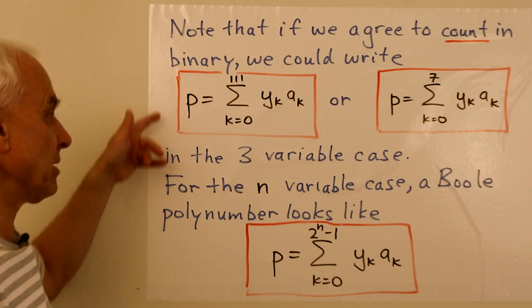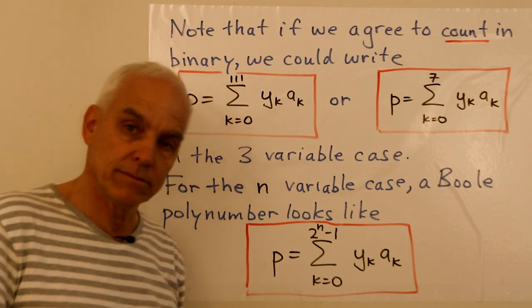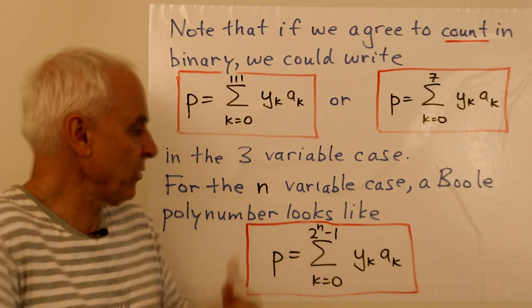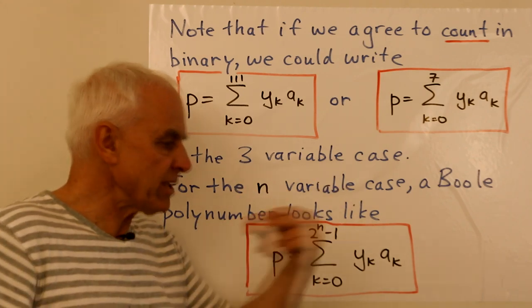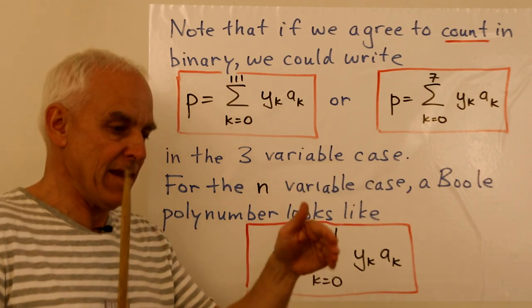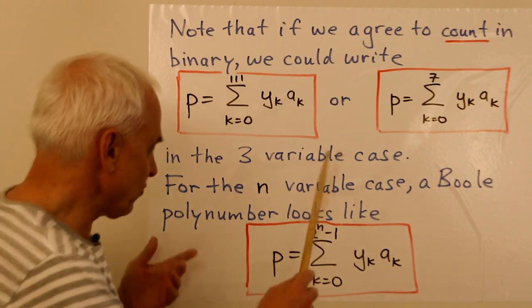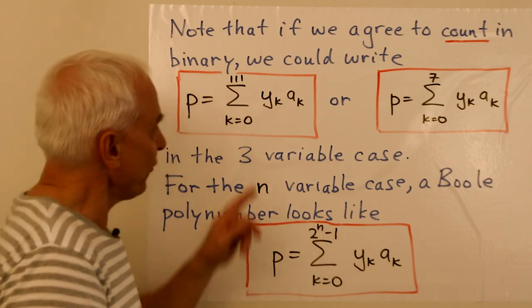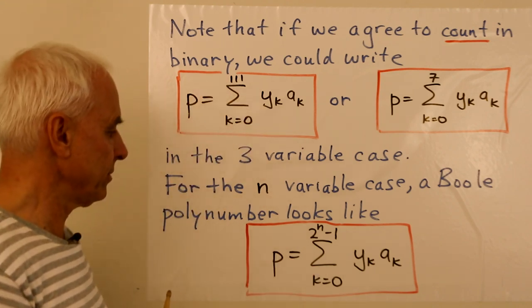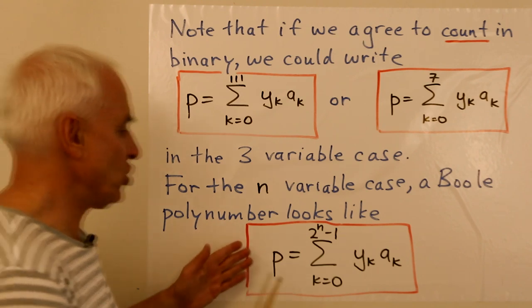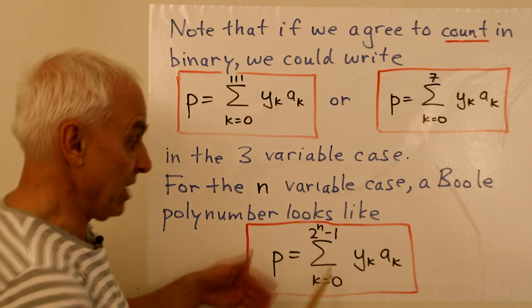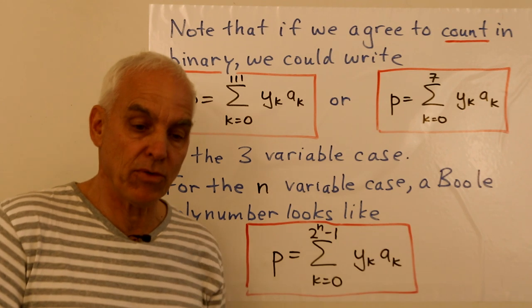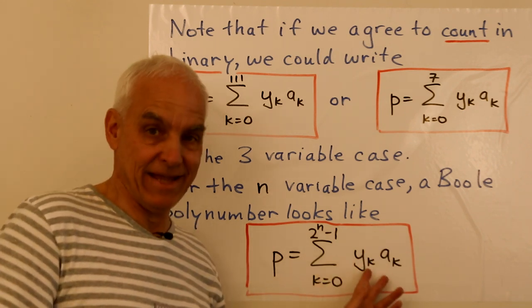For the n variable case, as opposed to the three variable case, a similar thing happens. A setup that we have now makes the n variable case just like the three variable case. We don't have to really introduce any more terminology. We're naturally cycling through all the subsets of this n element set, A0, A1, up to A_{n-1}. So we could just write p equals sum from k equals 0 to 2^n - 1, y sub k times a sub k. And instead of writing 2^n - 1, we could also write a bunch of ones, n ones. So that's very nice. So we have a very general form for a Boole polynumber as a linear combination of a sub k's, the k's just being the numbers from 0 up to 1 less than the power of 2 that we're interested in, and everything written in binary, these labels written in binary.